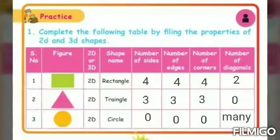Then, triangle. Triangle is a 2D shape. It has 3 sides, 3 edges, 3 corners and 0 diagonals.